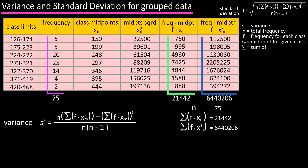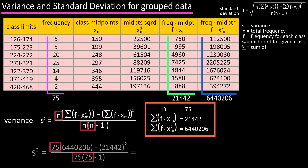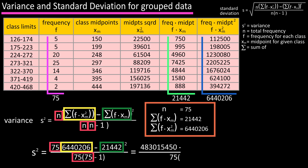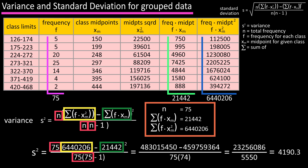Now we have everything to plug into the equation. We plug in 75 for n, 6,440,206 for Σ(f · xm²), and 21,442 for Σ(f · xm). After computing, we get s² = 4,190.3 as the sample variance for the grouped data.